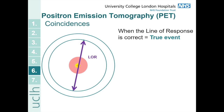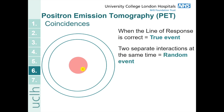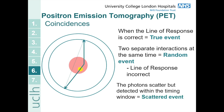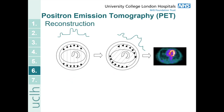When the line of response is correct — the event really did happen along that line — we call this a true event, and this is what we want to be detecting to build up our image. You could also have two separate interactions at the same time and record the photons from those two separate events, drawing an incorrect line of response between them — we call this a random event. You could also have a case where one of the photons scatters before being detected, again producing an incorrect line of response — this is called a scattered event. Image reconstruction in PET is very similar to that for SPECT: instead of having projections from different angles of the rotating head, you build up your projections from those lines of response, and then use them to create your 3D image through a reconstruction algorithm.